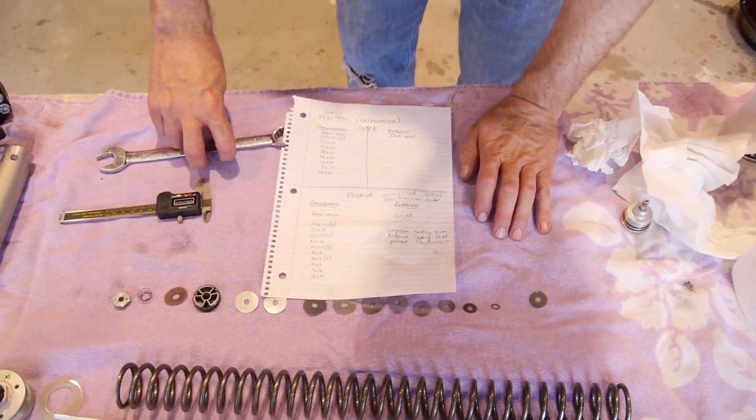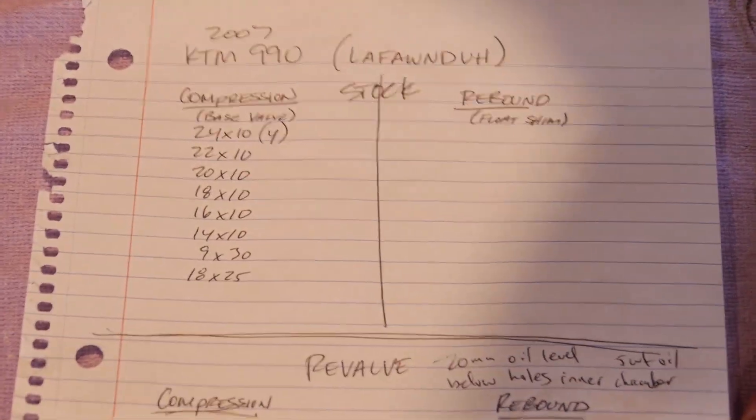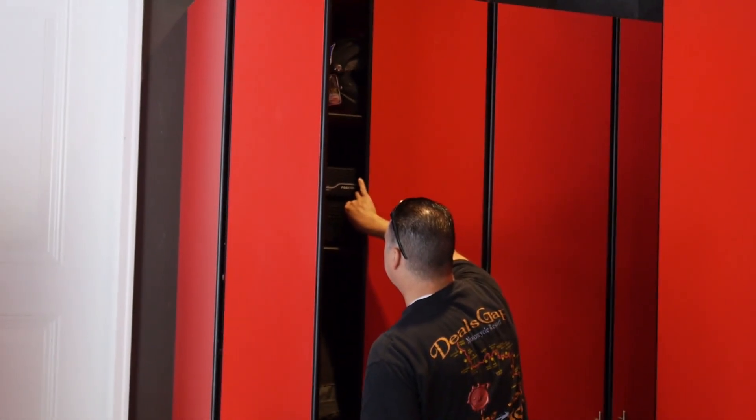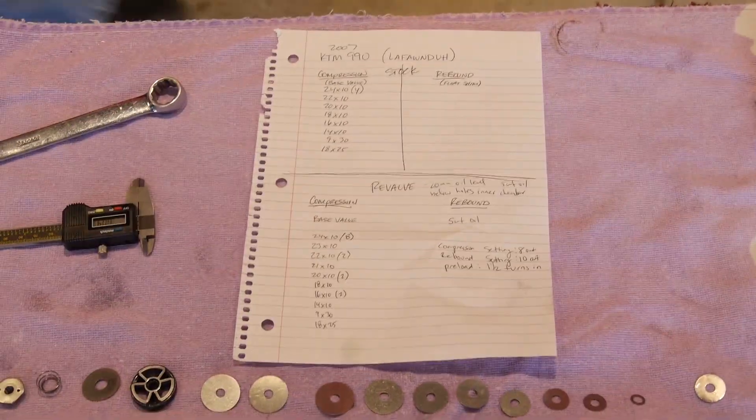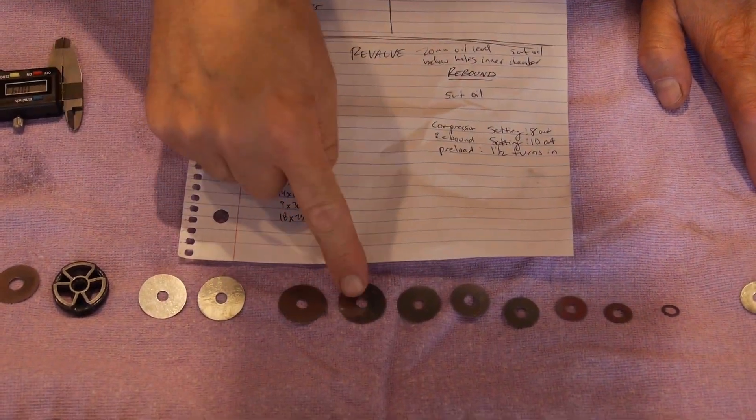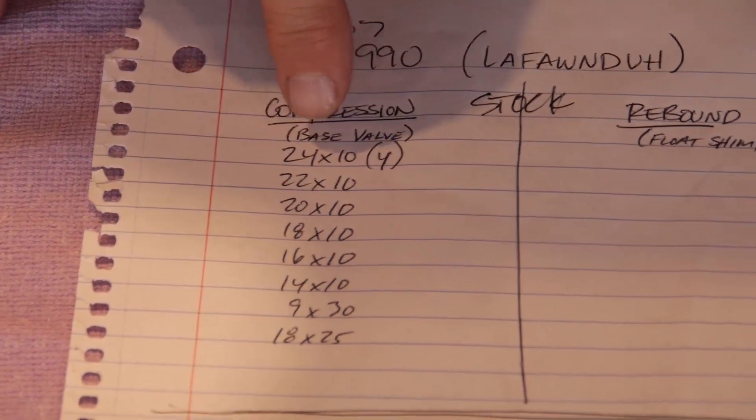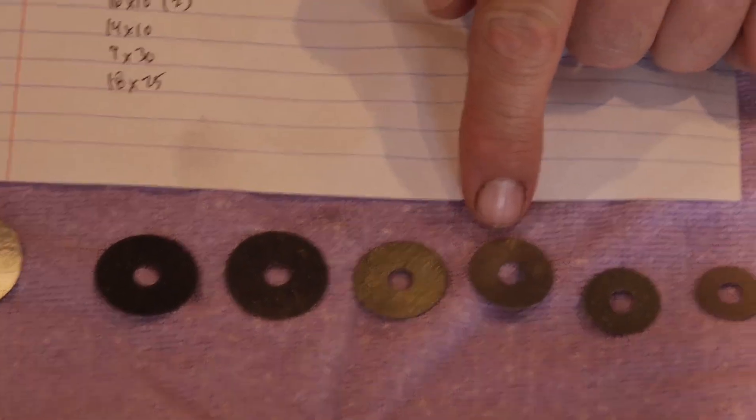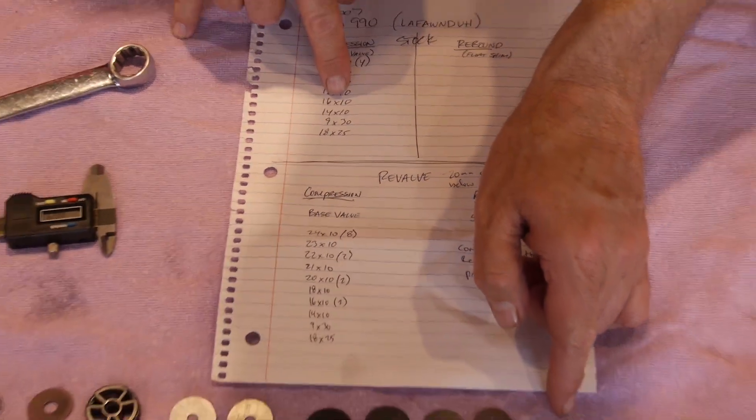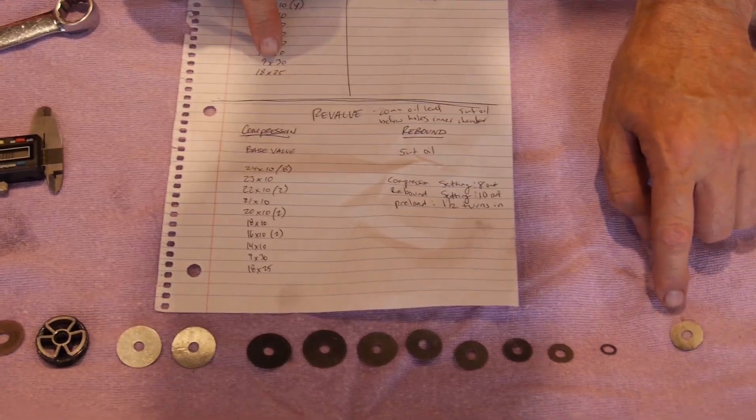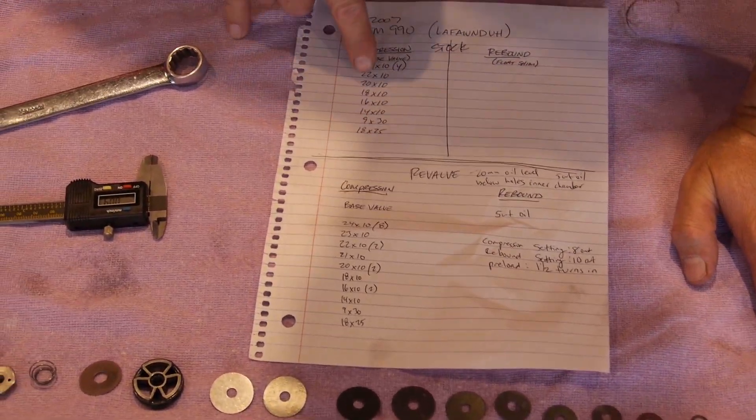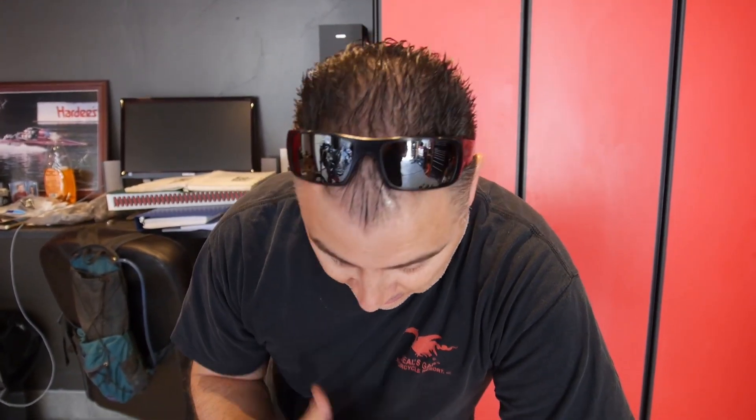And now we're going to show you the difference in what we did, or what we're going to do. So you can see these one, two, three, four shims. Okay, so these four shims is what we call low speed compression, and they measure 24 by 10s. This is the stock base valve. Then the next one is a 22 by 10, then the next one's a 20 by 10, then an 18 by 10, then a 16, then a 14, and then a 9. This is just a base plate. That has really no value. So that's the stock shim stack. So your bike is a 2010? Yep. So 2010 KTM 990 is exactly the same as an 07 KTM 990, which is what mine is. That's what this was taken from.